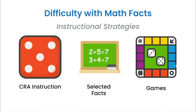Make sure to have students touch and say, or write and say, what they're doing to build that internal dialogue. An example of this is analyzing what 243 is made of: two hundreds, four tens, and three ones. The student touches and says the quantities and then tells us the name of the quantity — 243.